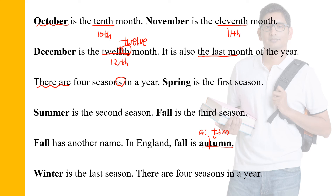October is the tenth month. November is the eleventh month. December is the twelfth month. It is also the last month of the year. There are four seasons in a year — seasons means spring, summer, fall, winter. Spring is the first season. Summer is the second season. Fall is the third season. Fall has another name; in England, fall is autumn. Winter is the last season — it is the fourth and also the last season.